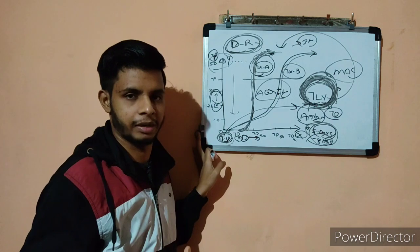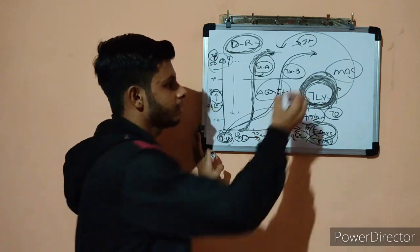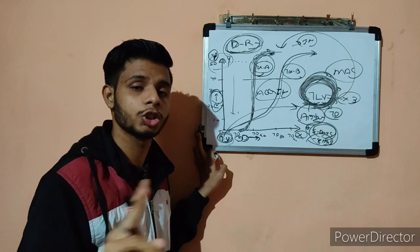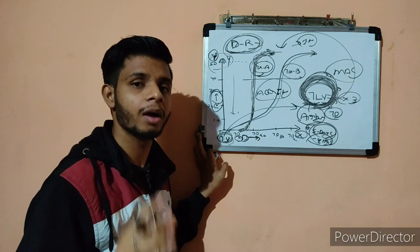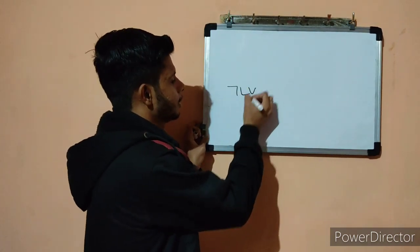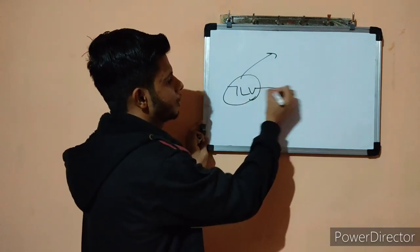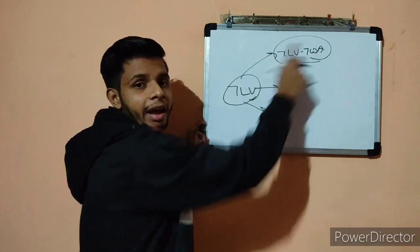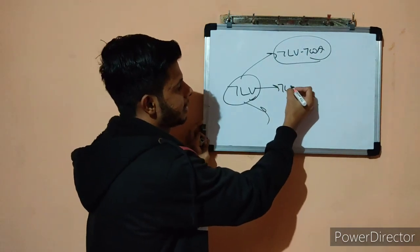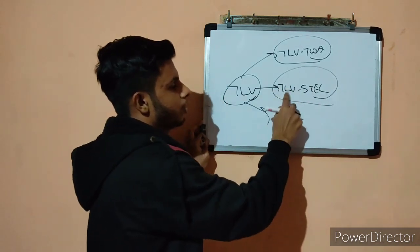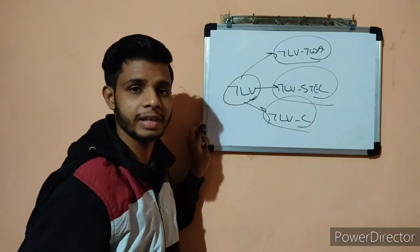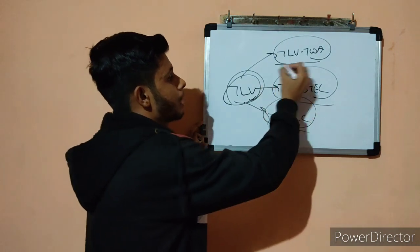Now let us understand the types of TLV. TLV can be classified into three main types: first, TLV-TWA — Time Weighted Average; second, TLV-STEL — Short Term Exposure Limit; and third, TLV-C — Ceiling. We will discuss each one by one — their meaning and applicability.